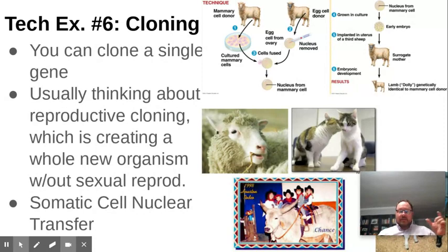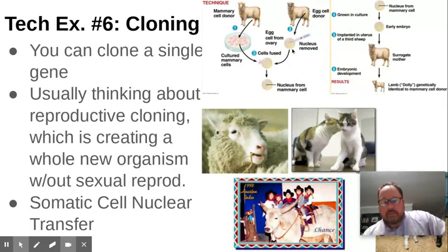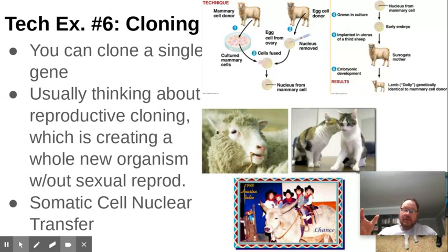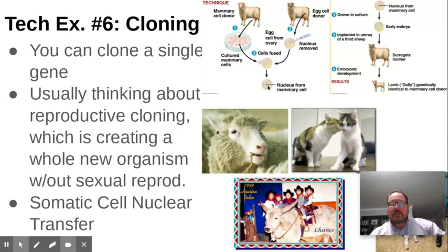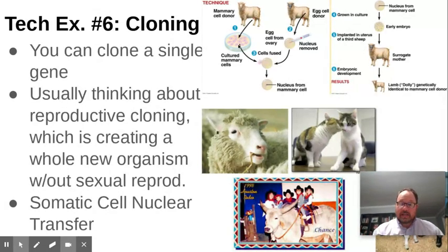Cloning can just be copying a single gene, but a lot of times when people think about cloning they're thinking about reproductive cloning - where you take an entirely new organism. The first animal to be cloned was a sheep called Dolly. What they did was take a donor cell from the mammary glands of a sheep, then take a donor egg from another sheep and remove the nucleus from that donor egg. Remember, an egg is going to be haploid.